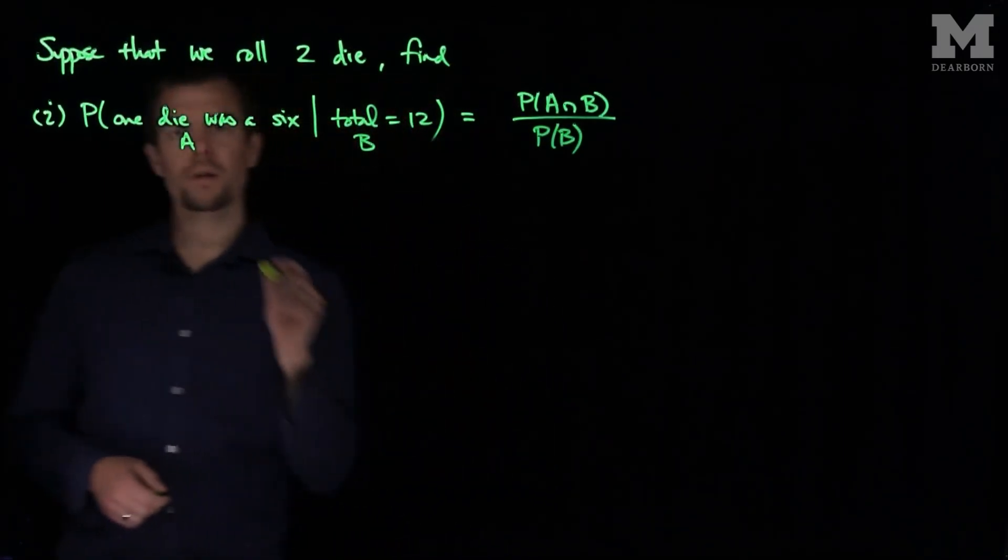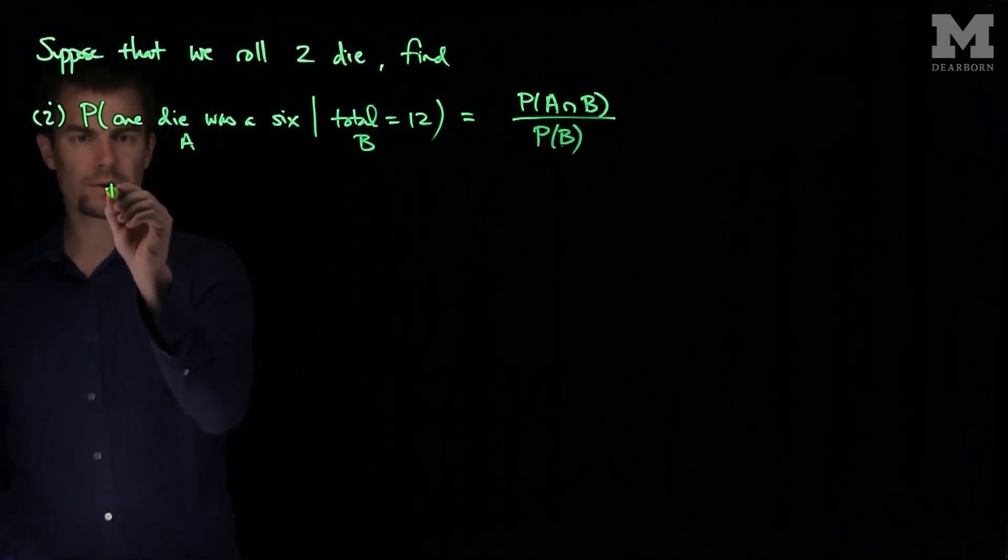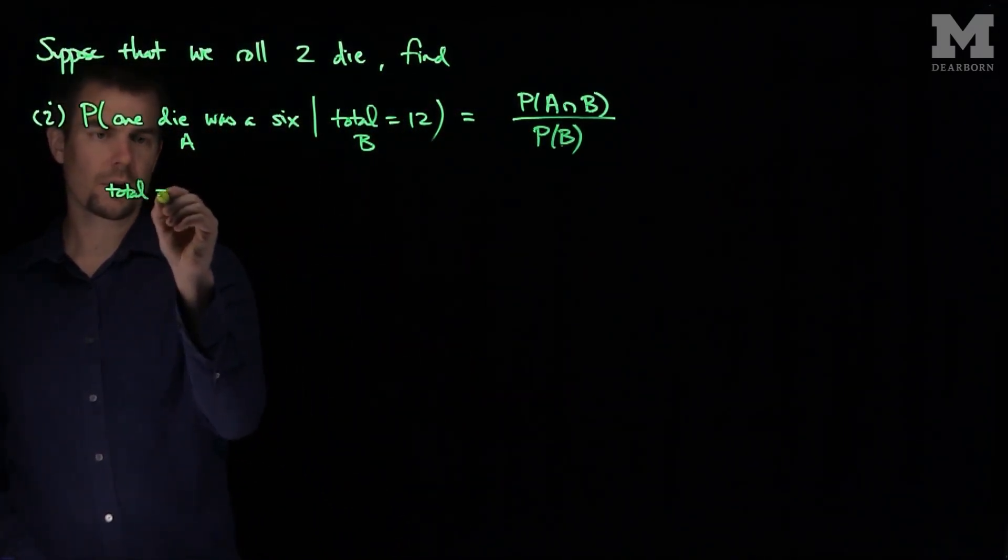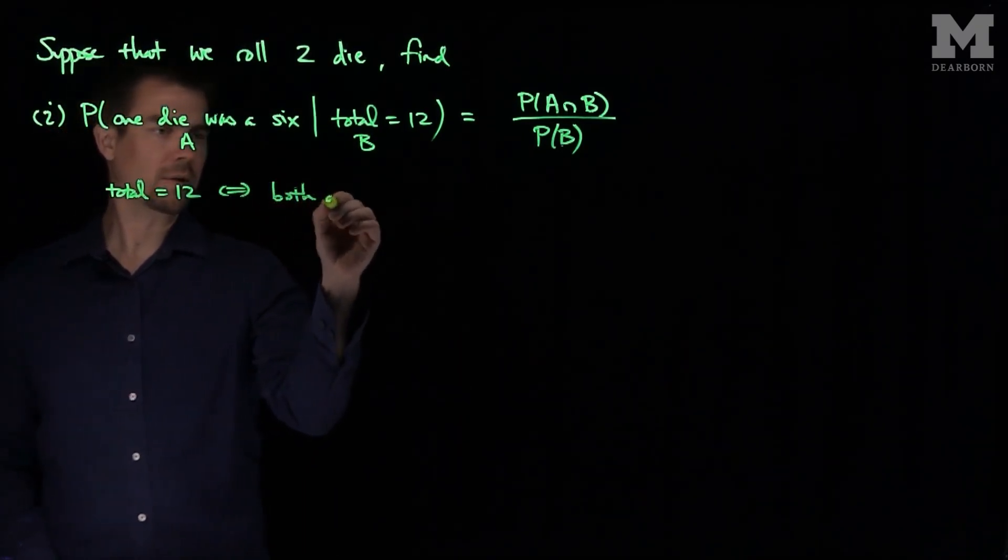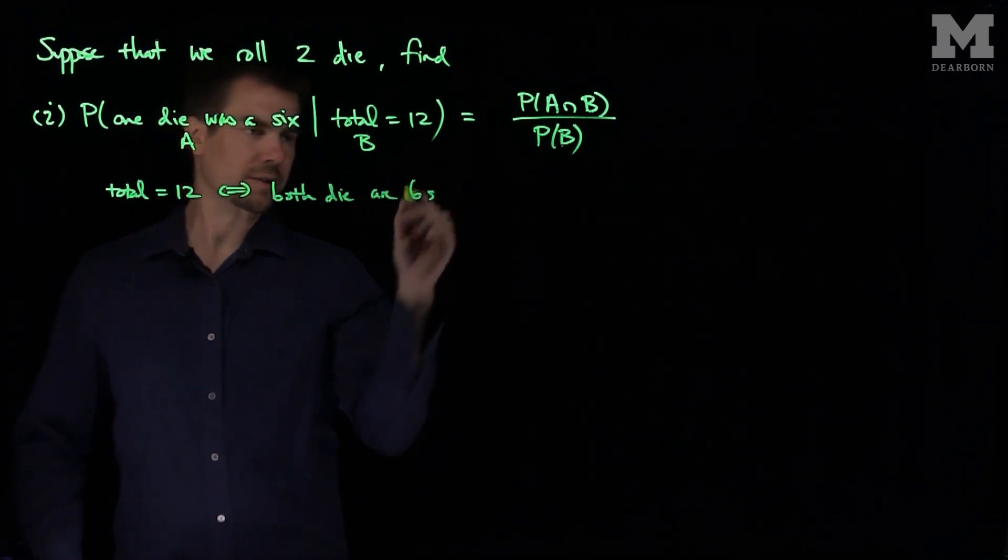And now if we think about this, the only way for the total to be 12, the total is 12 if and only if both die are 6s.